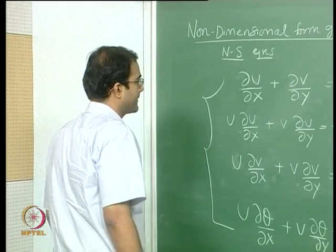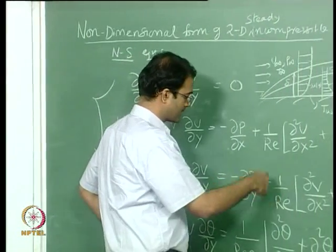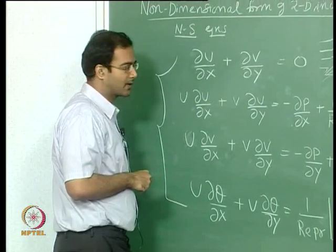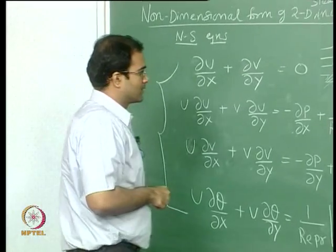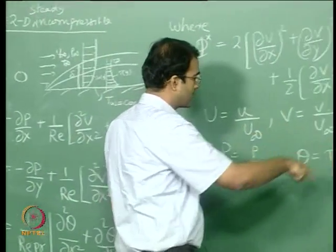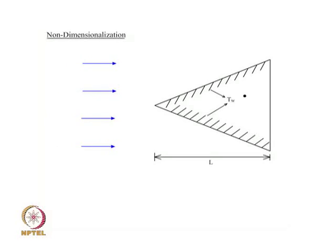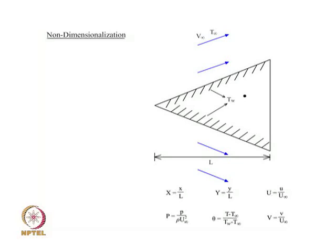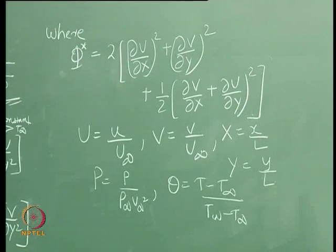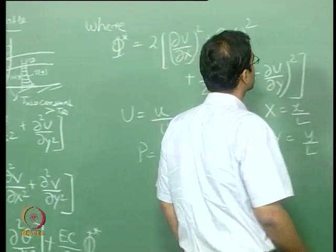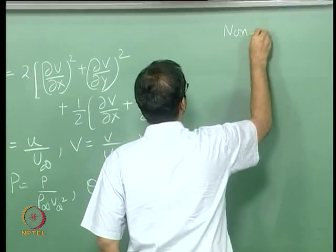All the capital letters represent non-dimensional quantities: U, V, X, Y, P. The way we are non-dimensionalizing was discussed last class. From this non-dimensional set of equations, certain non-dimensional numbers emerge, and we will now discuss those non-dimensional numbers.